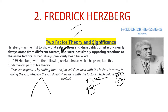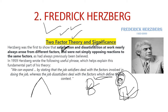Hygiene factors include working conditions, remuneration, company policies, security, and salary. This is very important. Remember the name of the theorist: first theory is F.W. Taylor — father of scientific management. Second theory is related to two factors developed by Frederick Herzberg. Frederick Herzberg gave two factors: first is motivator factors and second is hygiene factors.